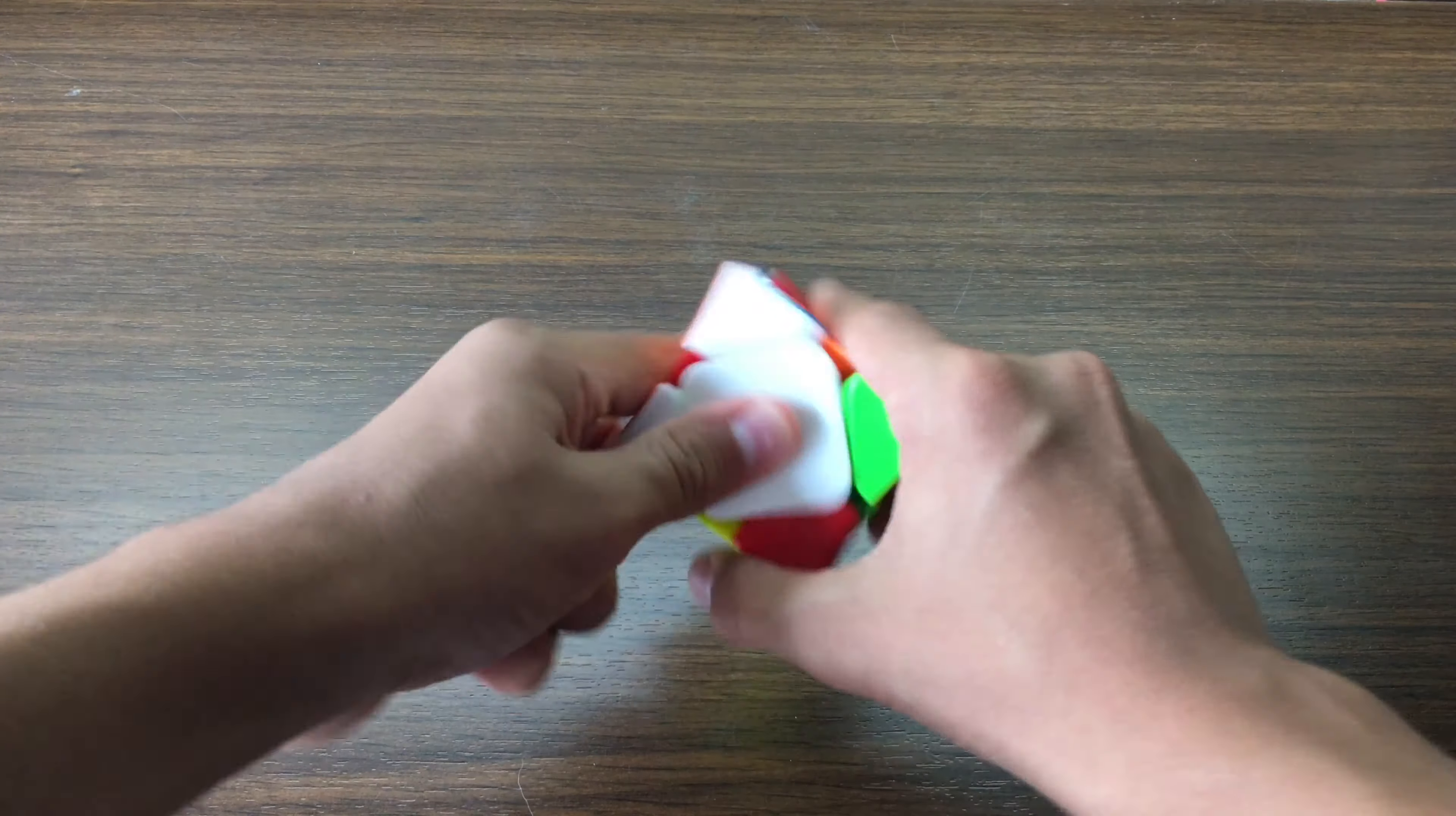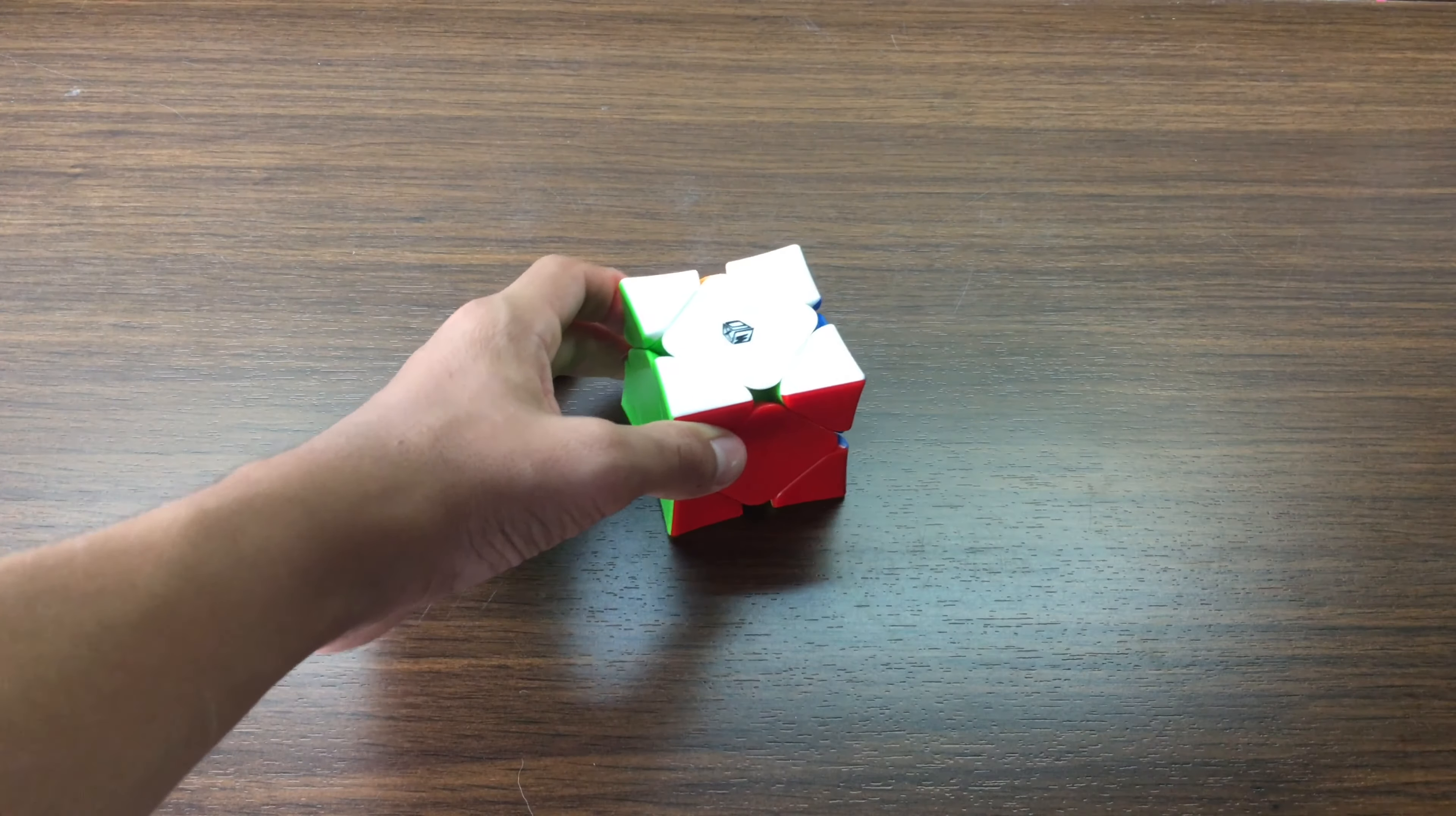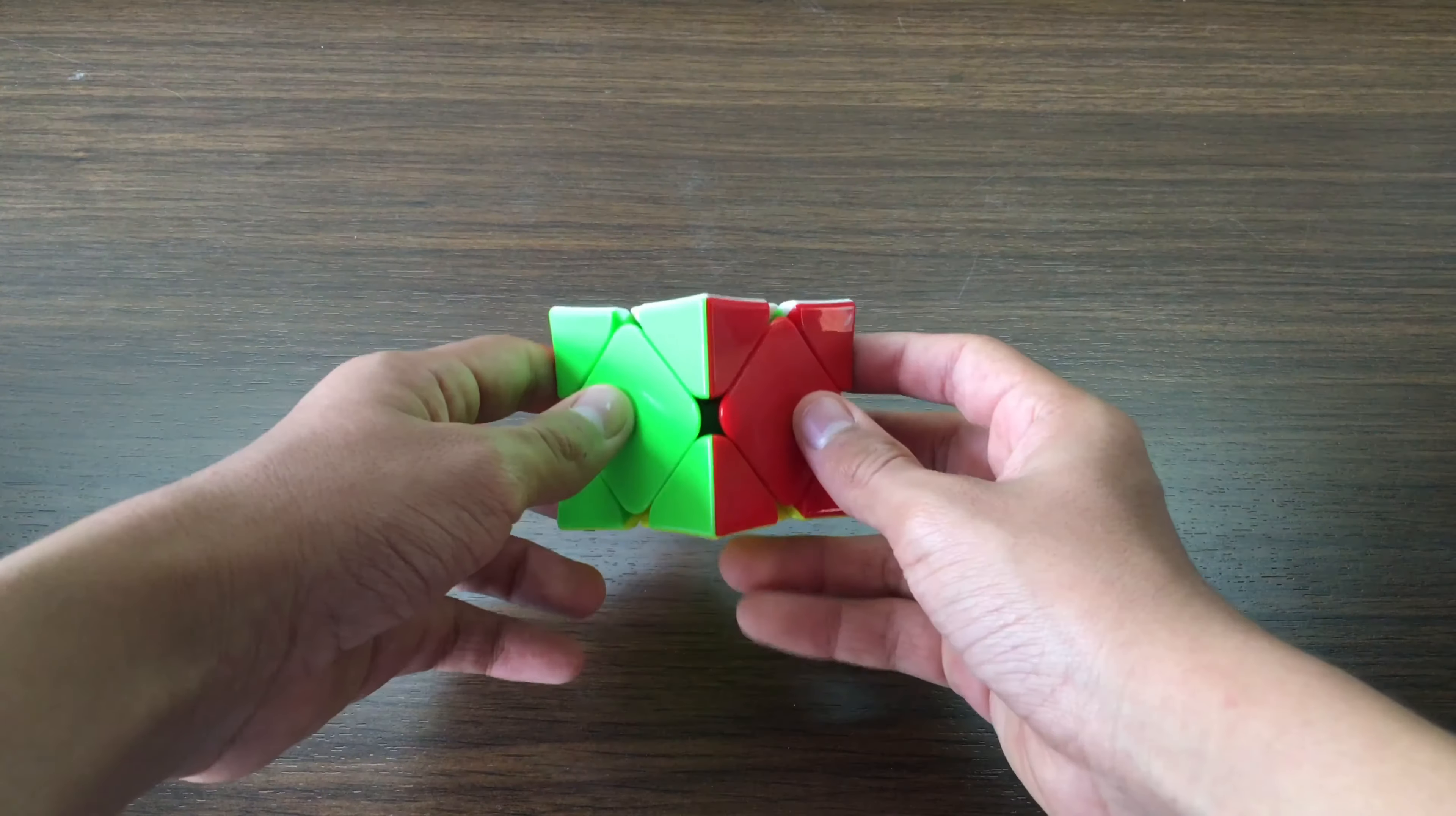so easy that I got a sub-4, which is like my PB as of now. And I promise I didn't cheat or anything—this was the very first attempt I tried it on and I got a 3.99. So let's get on with the scramble. With white on top, red on the right, and green on